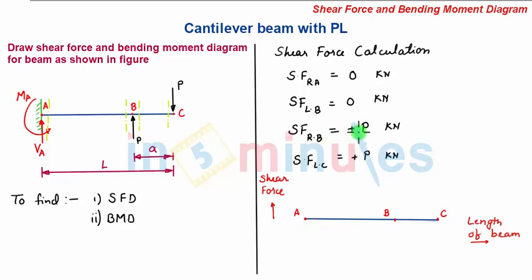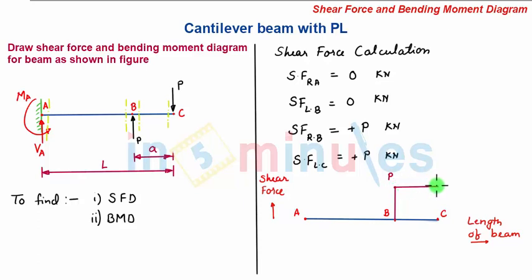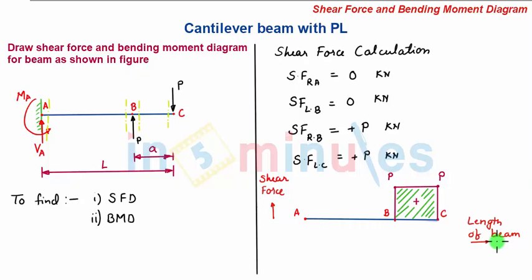The shear force at the right of B is plus P. Taking a suitable scale, we plot this plus P kilonewton force and connect the two points with a vertical straight line. The shear force to the left of C is also P, meaning the shear force does not change between B and C and remains at value P. Joining these points, we see that shear force acts only between B and C, with no shear force between A and B. This shear force is in the positive region. With this, the shear force diagram is complete.